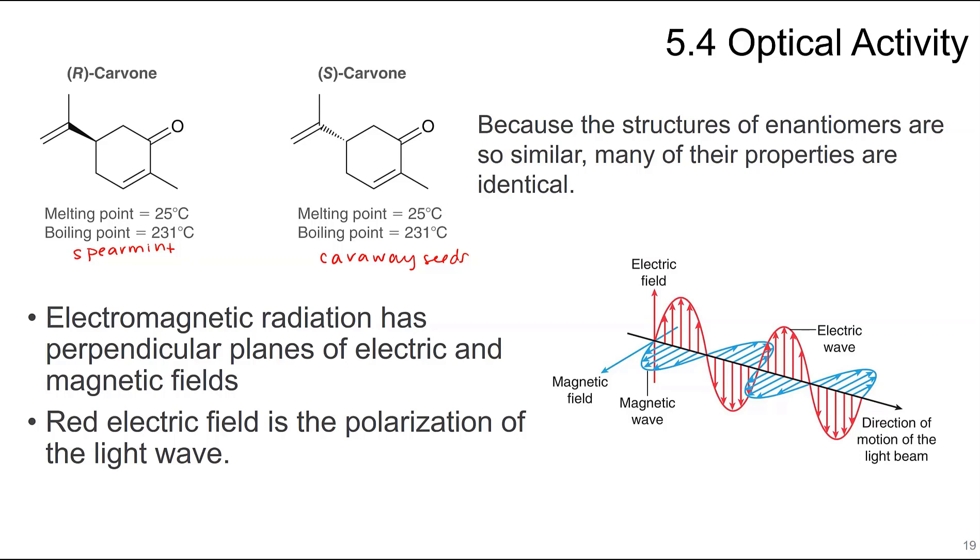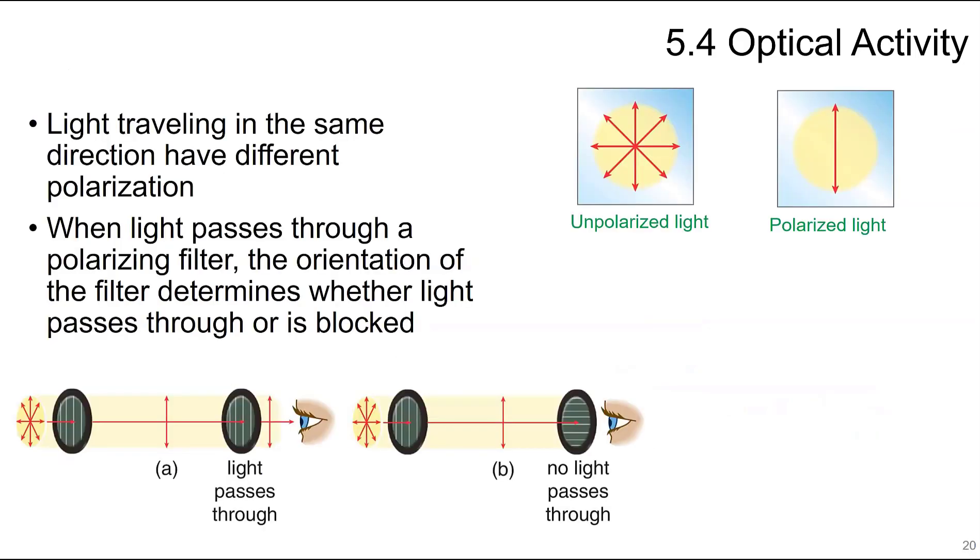Electromagnetic radiation has perpendicular planes of electric and magnetic fields. The red electric field is the polarization of a light wave in one plane, while the magnetic field is in a perpendicular plane. Light traveling in the same direction can have different polarization.